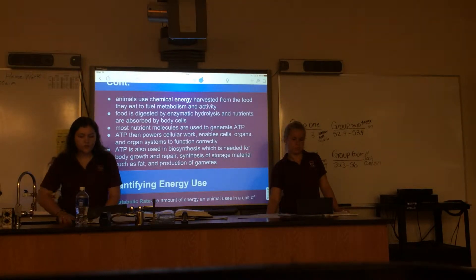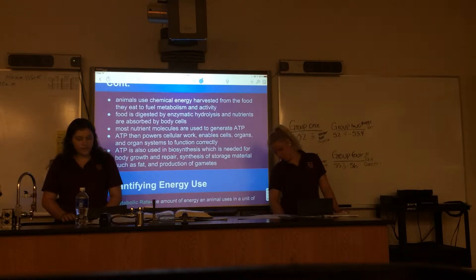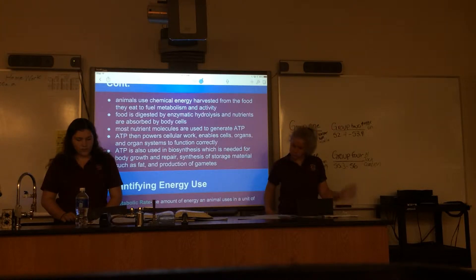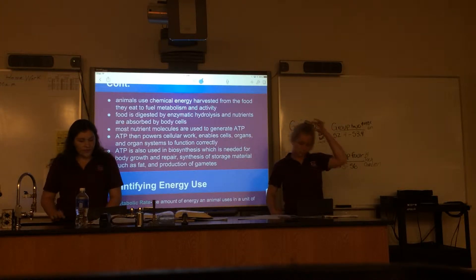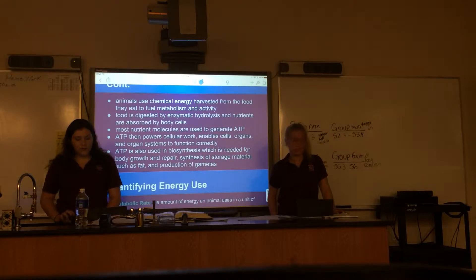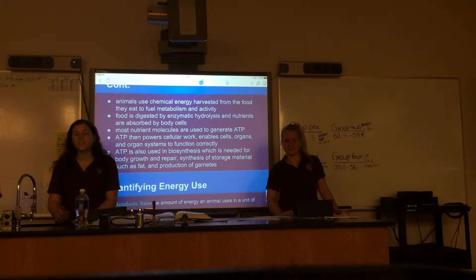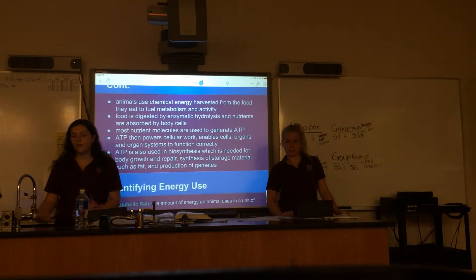Animals use the chemical energy harvested from food to fuel metabolism and activity. Food is digested by enzymatic hydrolysis and nutrients are absorbed by body cells. Most nutrient molecules are used to generate ATP, which powers cellular work and enables cells, organs, and organ systems to function correctly. ATP is also used in biosynthesis for body growth and repair, synthesis of storage materials such as fat, and production of amines.